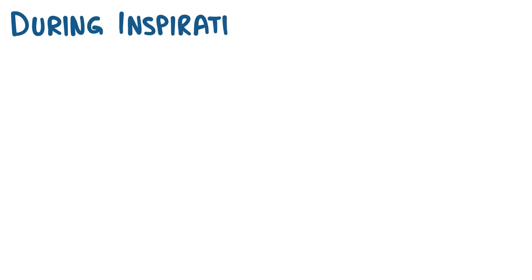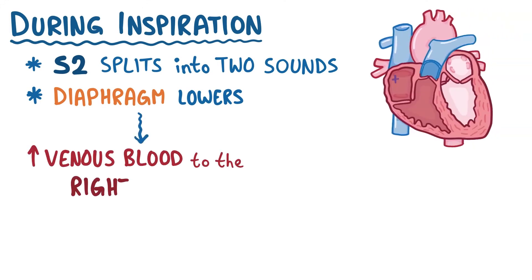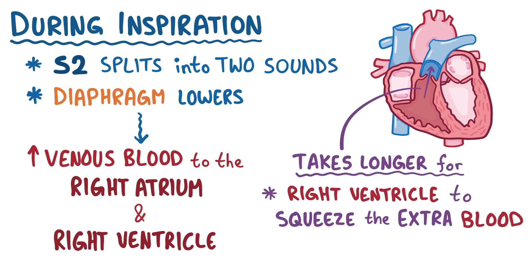During inspiration though, if you listen carefully with a stethoscope, this S2 sound actually splits into two separate sounds. That's because the diaphragm muscles lower during inspiration, and that creates negative pressure in the chest to bring in air. And that negative pressure also brings a bit more venous blood back to the right atrium and right ventricle. It takes a little bit longer for the right ventricle to squeeze the extra blood into the pulmonary arteries, and it takes a little bit longer for the pulmonary valve to close.